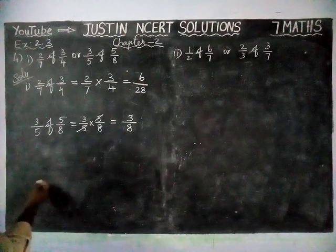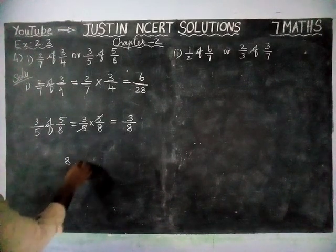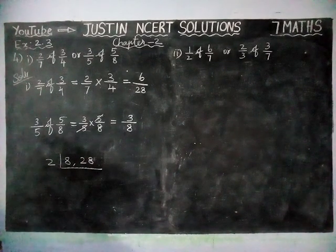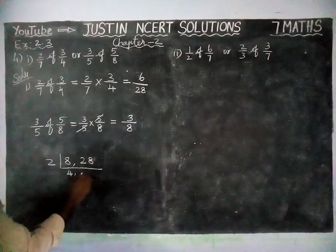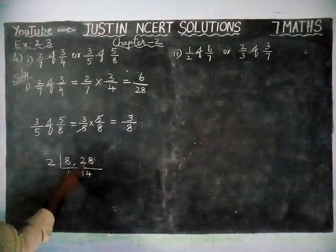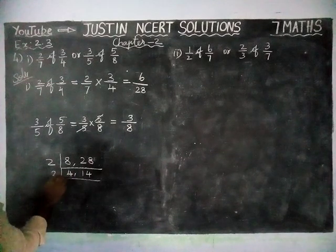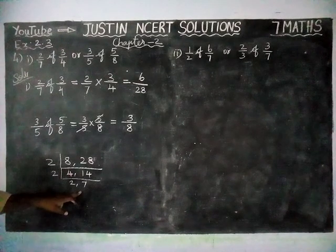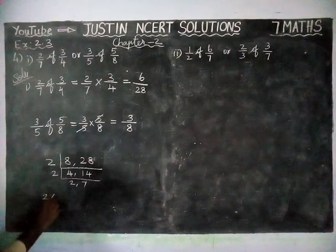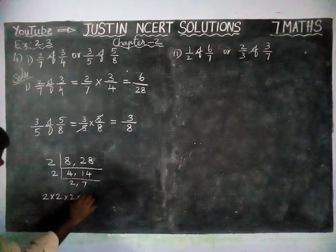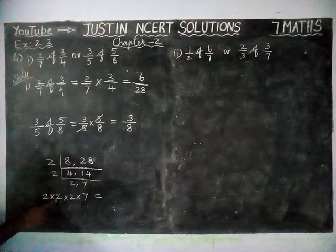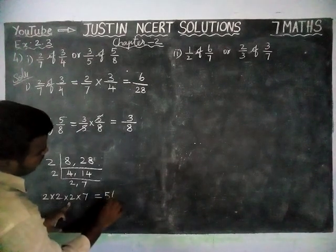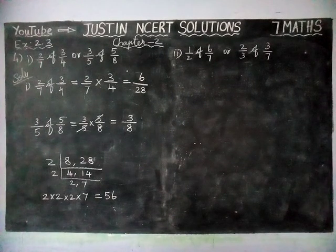LCM of 8 and 28. We divide by 2: we get 4 and 14. Dividing again by 2: we get 2 and 7. Hereafter we cannot divide by a common divisor, so we multiply: 2 × 2 × 2 × 7 = 56. So 56 is the LCM of 28 and 8.